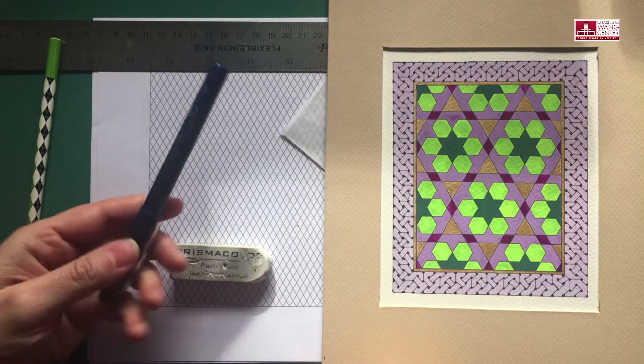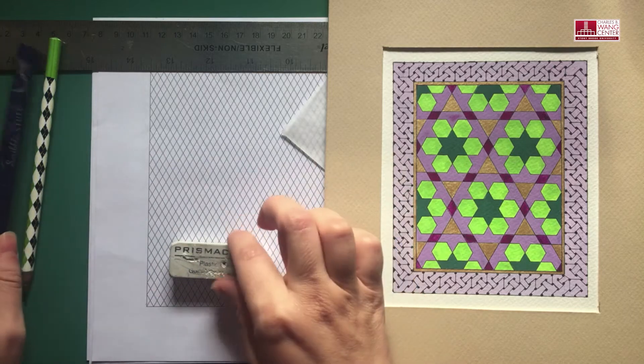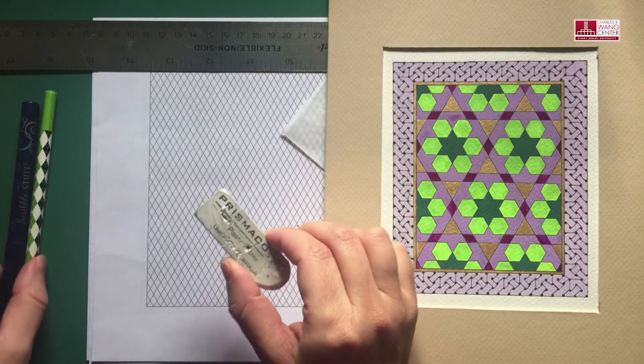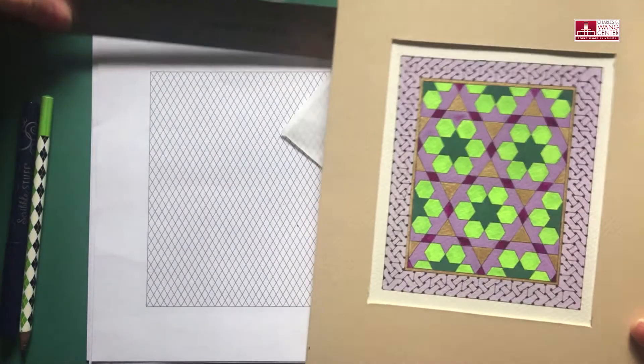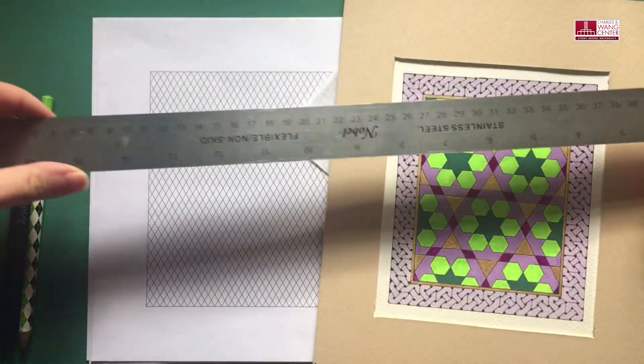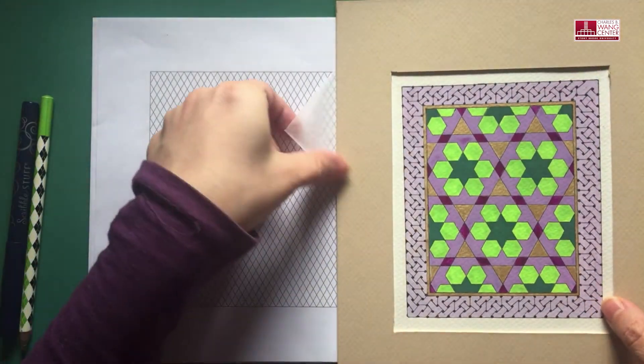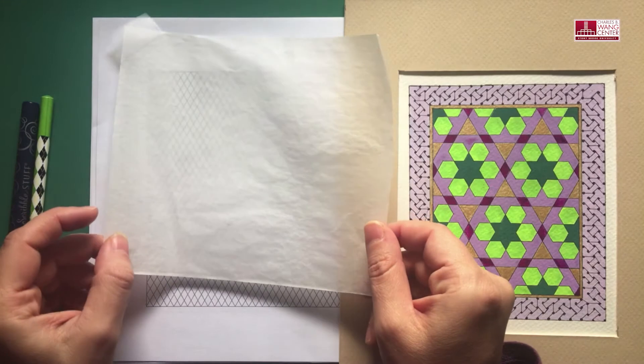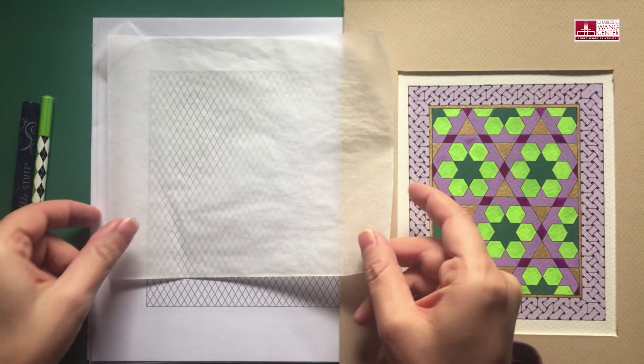a pen in case you want to have the lines be very bold, an eraser in order to erase your mistakes, a ruler, it can be any kind of ruler, tracing papers if you want to transfer your final pattern into a watercolor paper or any kind of surface,